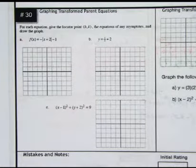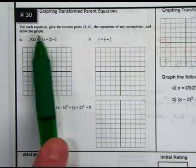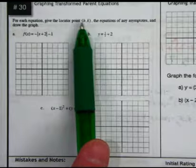Let's take a look at target 30, graphing transformed parent equations. This really all comes down to finding, I mean it even says it right here, find the locator point HK.